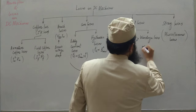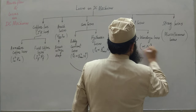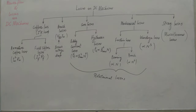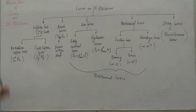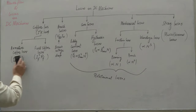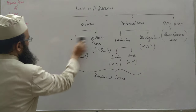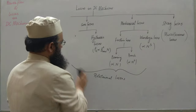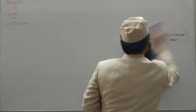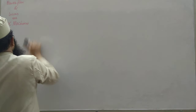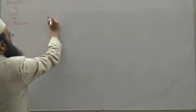So windage loss is proportional to N³. Now we will discuss power flow in DC machines. So far we have discussed losses; now we discuss power flow — first for DC motor, then for DC generator. Input power, output power, and losses in between represent the various stages in DC machines.